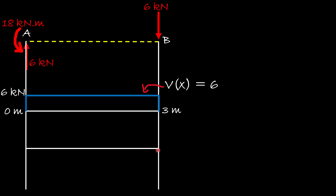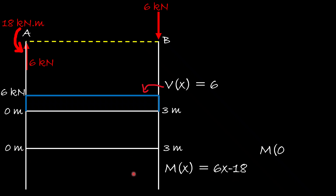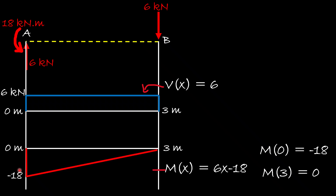For the moment diagram, we use M(x) = 6x − 18. At x = 0: M = −18 kN·m. At x = 3 m: M = 0. Since this is a linear function, we draw a straight line from −18 kN·m at A to 0 at B. This completes the shear and moment diagrams, along with the equations used to draw them. Thank you very much, have a good day.